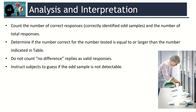For the results analysis, you should count the number of correct responses and the number of total responses. Then, determine if the number of correct responses for the number of testers is equal to or larger than the number indicated in the table. Do not count 'no difference' replies as valid responses, and instruct subjects to guess if the odd sample is not detectable.